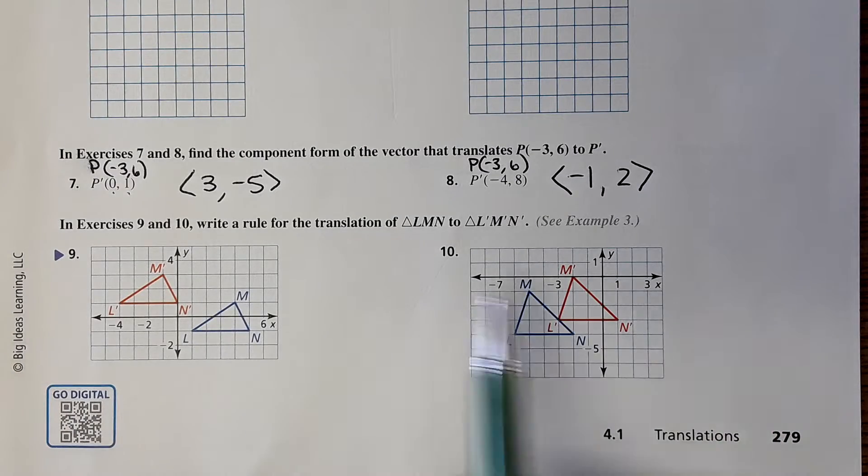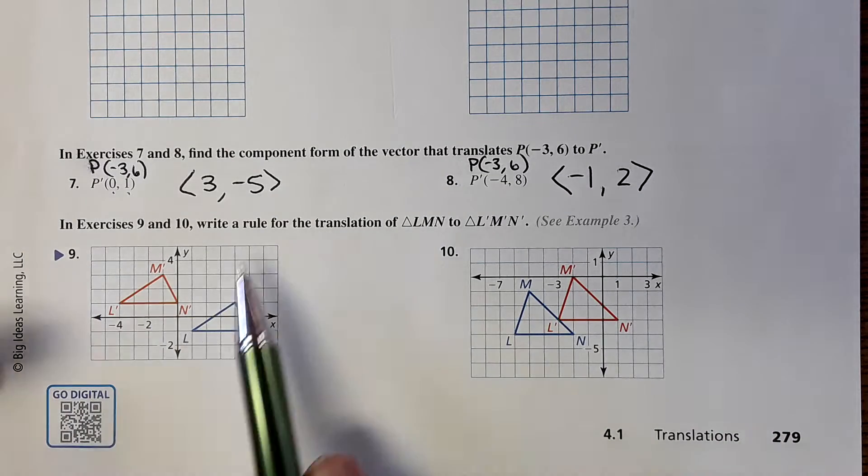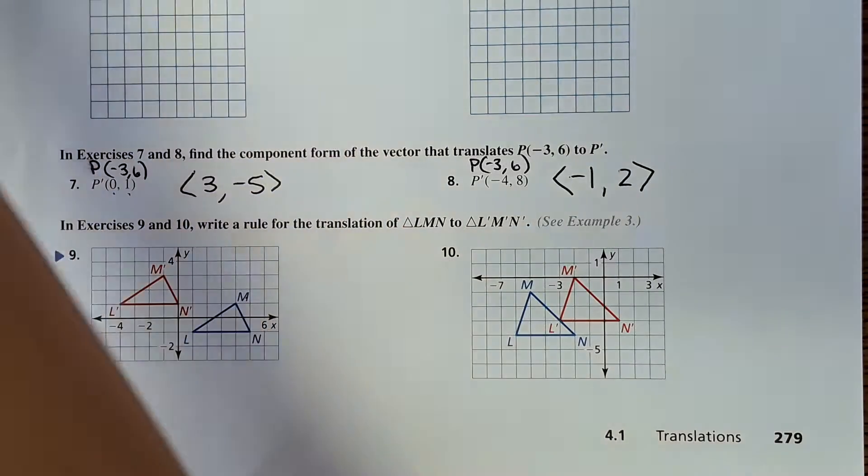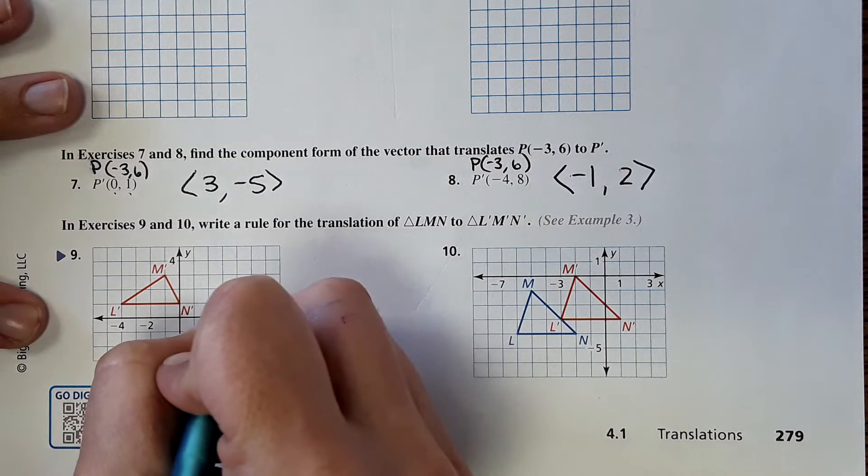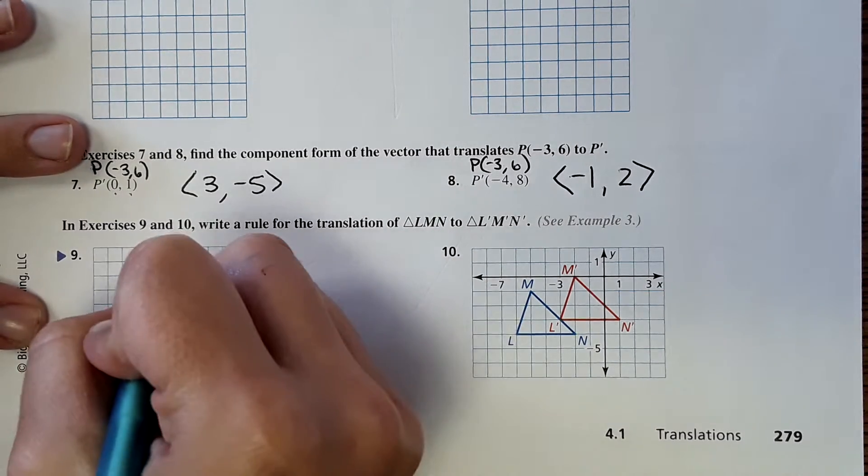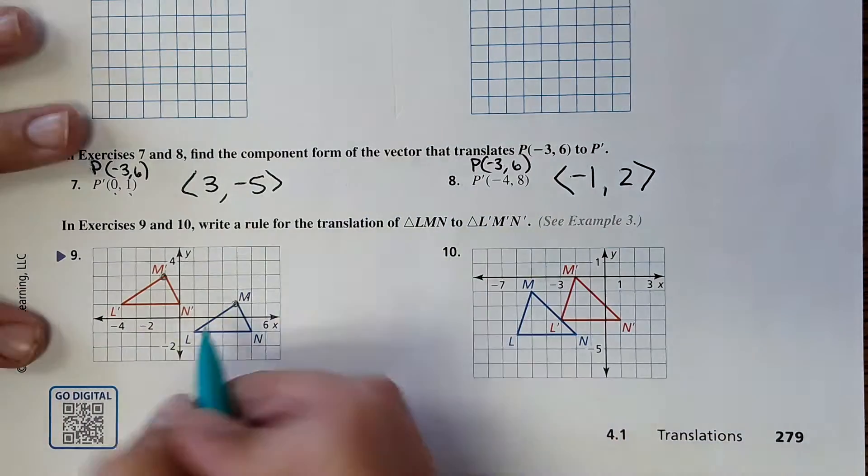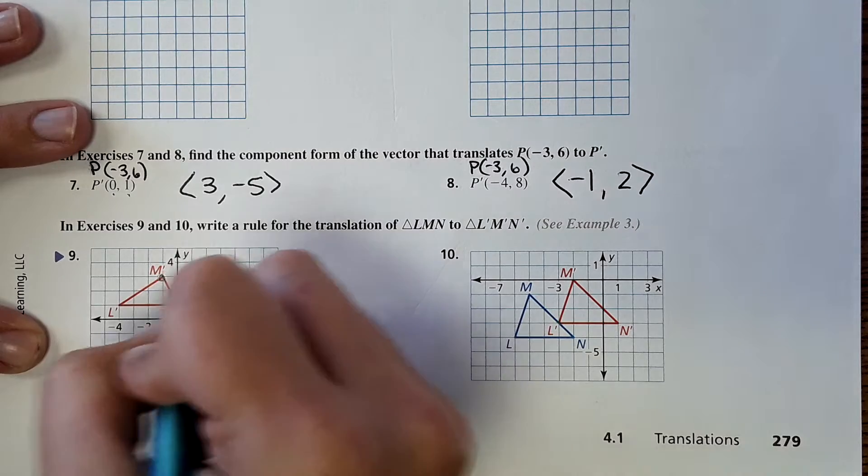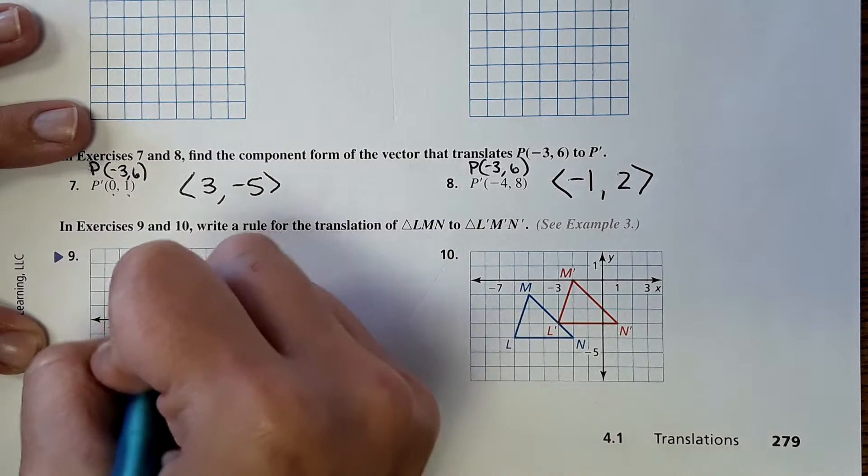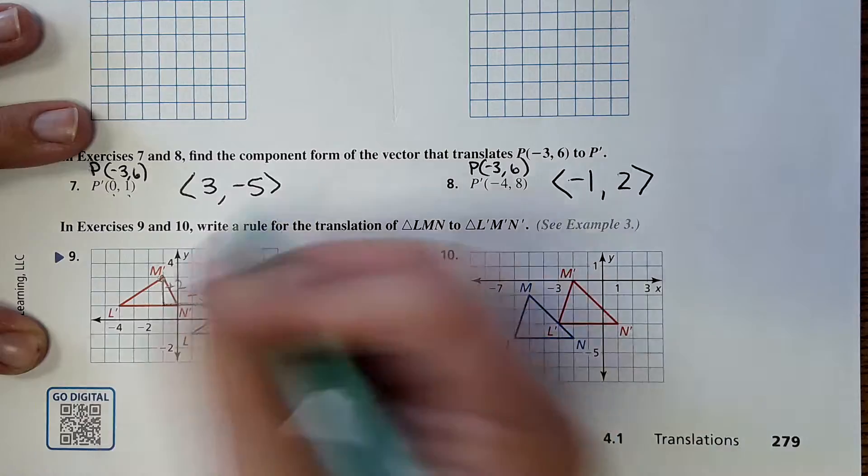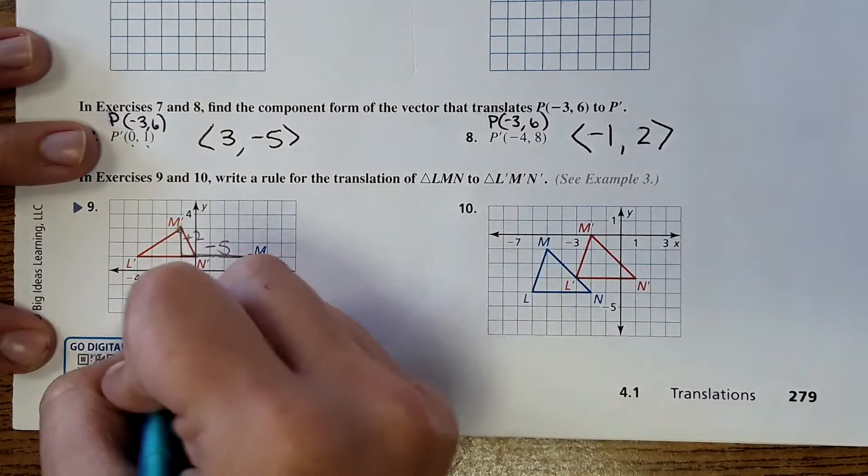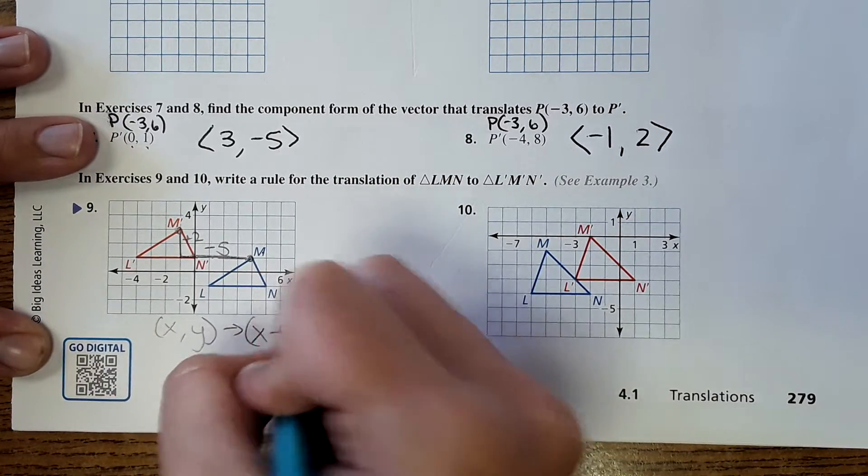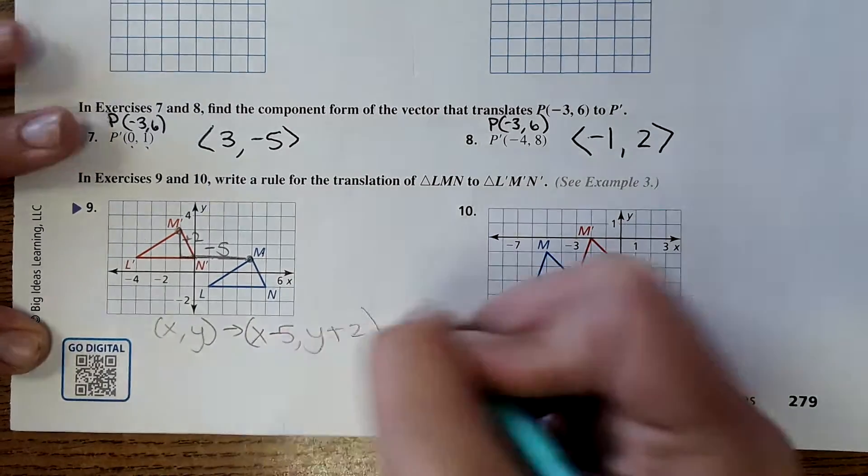Okay, and for 9 and 10, it says that there is a translation. We need to find the rule. So remember, it's going from M to M prime. And we have to do horizontal change and then vertical change. So I'm just going to choose one point, and I'm going to choose M. And then the horizontal change here, it's going 1, 2, 3, 4, 5 units. So negative 5, and then it's going up 2. So that would be a positive 2. So in terms of the rule, the format would be X, Y is X minus 5, Y plus 2. And that's how the rule would be written.